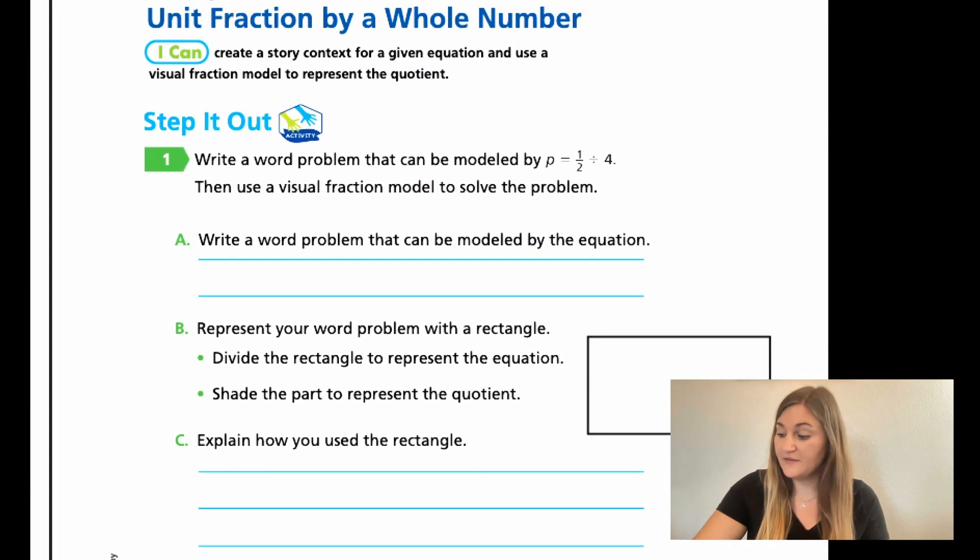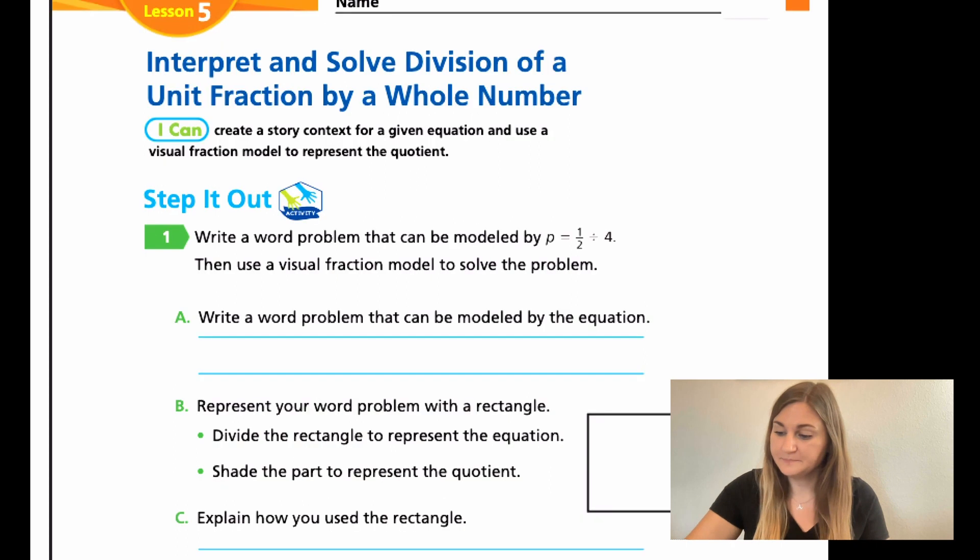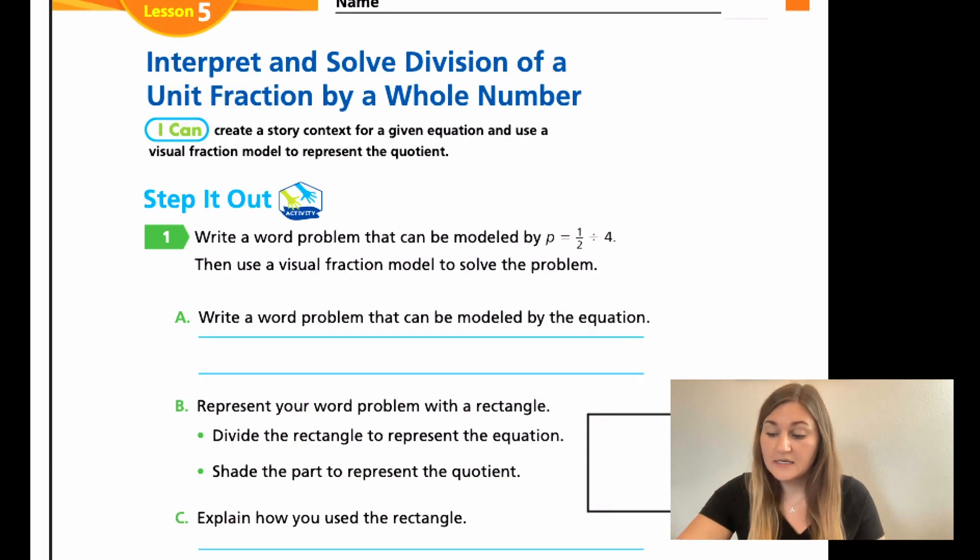Moving into the lesson 5 on page 283, we have a step it out. Number 1 says write a word problem that can be modeled by P equals 1 half divided by 4. Then, use a visual fraction model to solve the problem. So, I went ahead and I said that there was half of a pizza and 4 family members are sharing that half pizza. So, how much does each member of the family get?